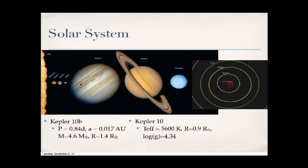The host star has a temperature around 5,600 Kelvin, so it's a little cooler than the sun. It's 0.9 solar masses and the radius is actually a little bigger than the sun, which means it's evolved. We have asteroseismology results from the star that tells us this is essentially a more evolved version of the sun.